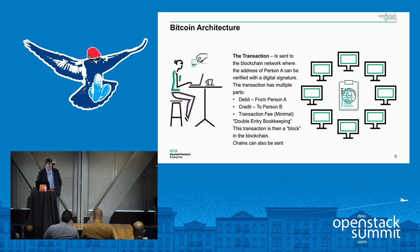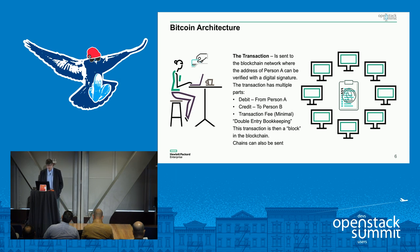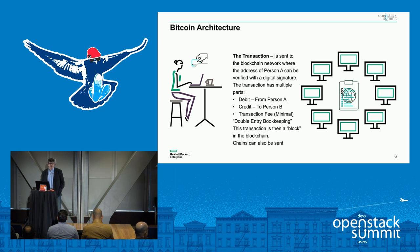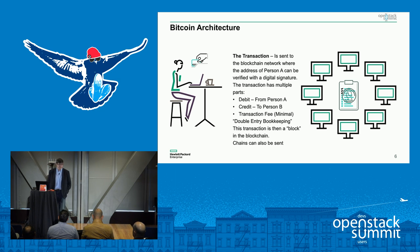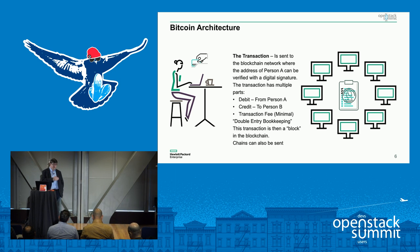The transaction is sent to the blockchain network — a collection of devices all participating in the blockchain ledger. The address of Person A is validated, as is the transaction submitted, to make sure it makes sense. There's a digital signature attached so they can prove who that person is. The transaction then has a debit — how much comes from Person A's wallet — a credit to Person B, and a transaction fee. Person A is losing more than Person B is gaining. It's essentially double-entry bookkeeping.